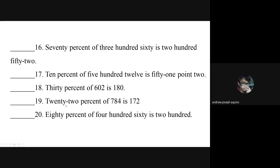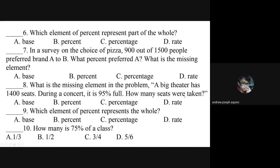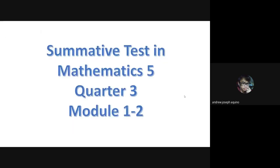Number eighteen: 30 percent of 602 is 180. Number twenty: 22 percent of 784 is 172. Number twenty: 80 percent of 460 is 200. That is your summative test in Mathematics 5, Quarter 3, Module 1 to 2. Good luck and God bless us all.